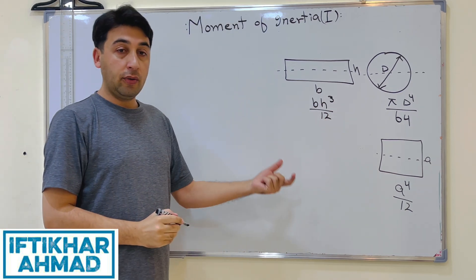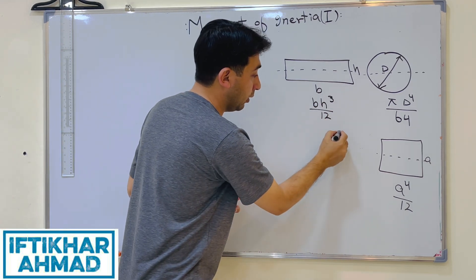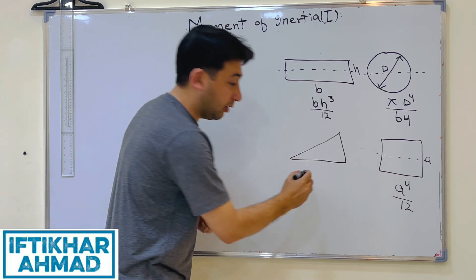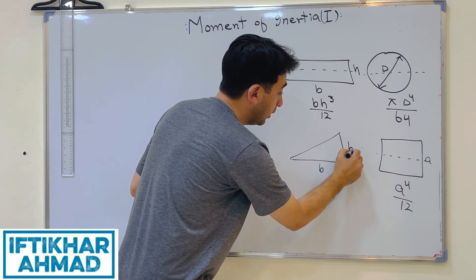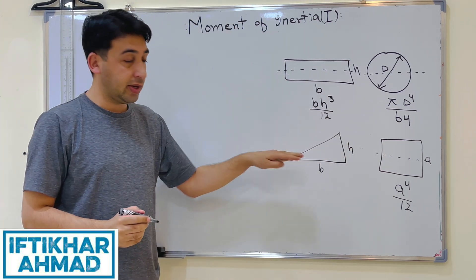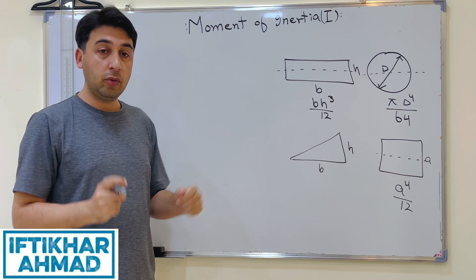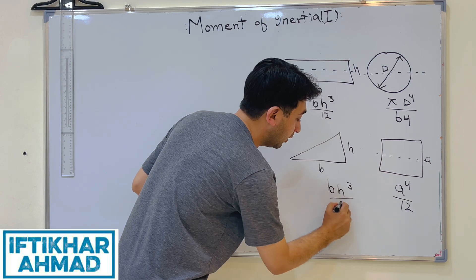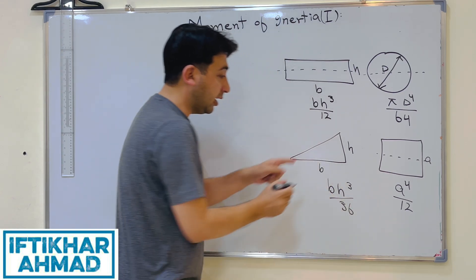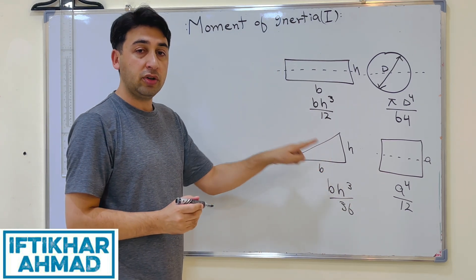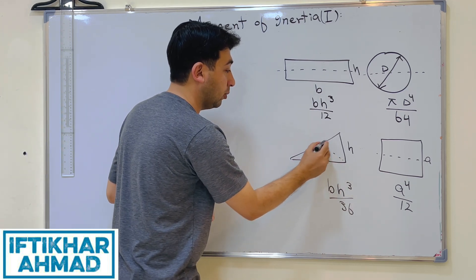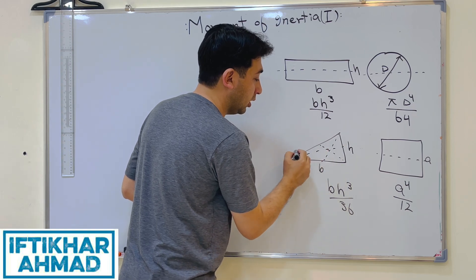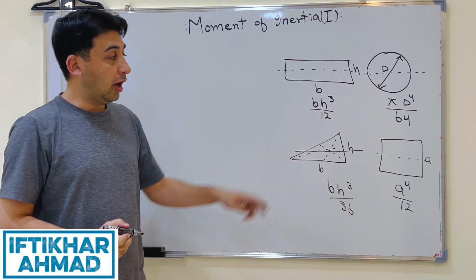If we have a triangle with base B and height H, the moment of inertia about the horizontal centroidal axis is BH³/36. The centroidal axis for a triangle passes through the point where the medians intersect.